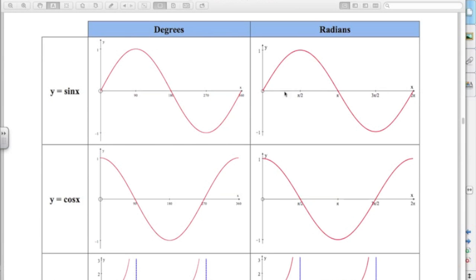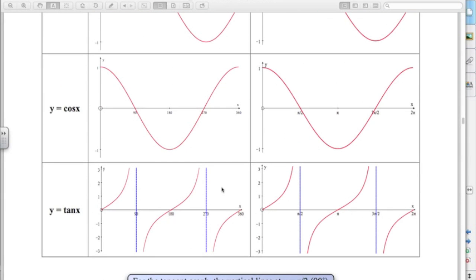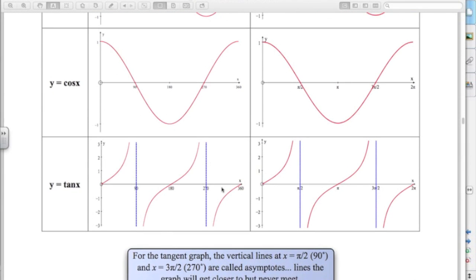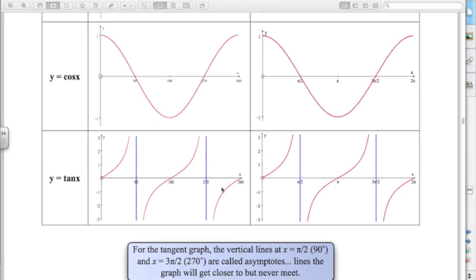And here's your tan graph. Those dotted lines you can see there at 90 and 270 are asymptotes. The graph gets close to them but never actually touches them.